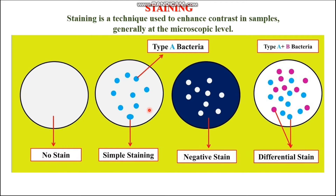So first of all, what is staining? Staining is a technique used to enhance the contrast in samples, generally at the microscopic level. When I take a slide with a bacterial smear that is not stained and examine it under a microscope it looks unclear, but when I add some stain to that bacterial smear containing prokaryotic bacteria it becomes visible. So staining is a process which enhances the contrast of cells in the sample so that we can identify them.